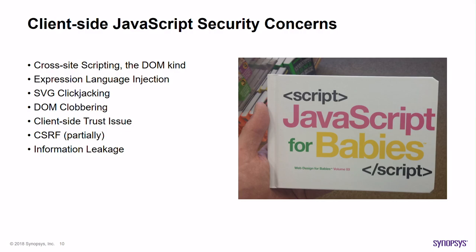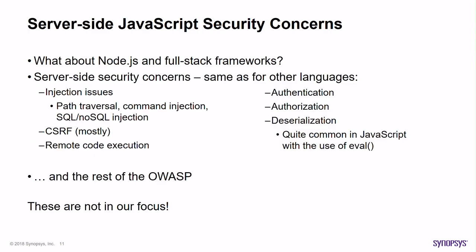CSRF is a server-side vulnerability, but some frameworks help protect against it. The client element takes a token and puts it in a POST parameter or HTTP header. Angular does this automatically; others require a third-party library or manual implementation, or you use JWTs. Information leakage also occurs when you load too much data and put it in local storage. Server-side JavaScript vulnerabilities in Node are similar to any other server-side language: injections, NoSQL injections, CSRF server-side token validation, remote code execution via eval, auth issues, deserialization.